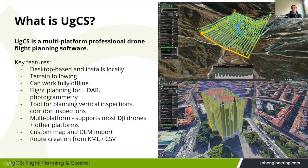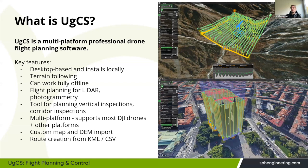Another key feature is that with UgCS you can create routes from KML or CSV files. If you have longer corridors available in a KML file, you can import them directly into UgCS and create routes from those. Today I'll show you exactly how that is done.